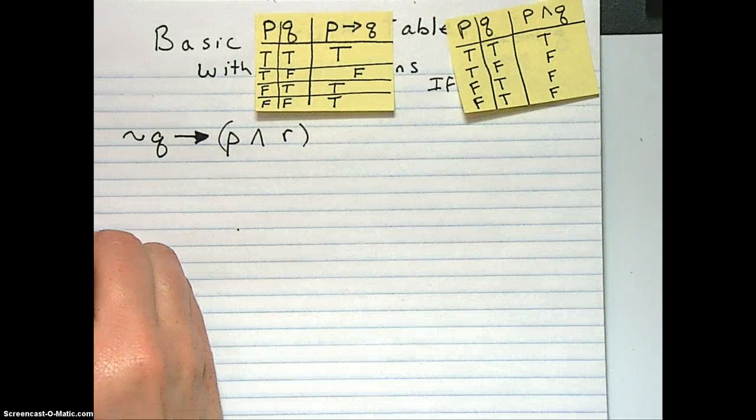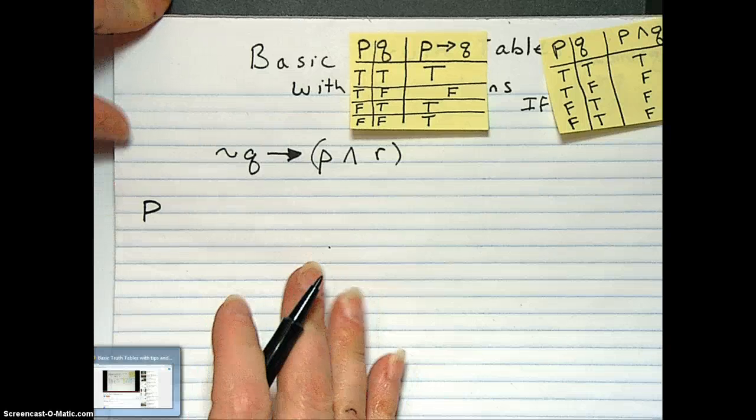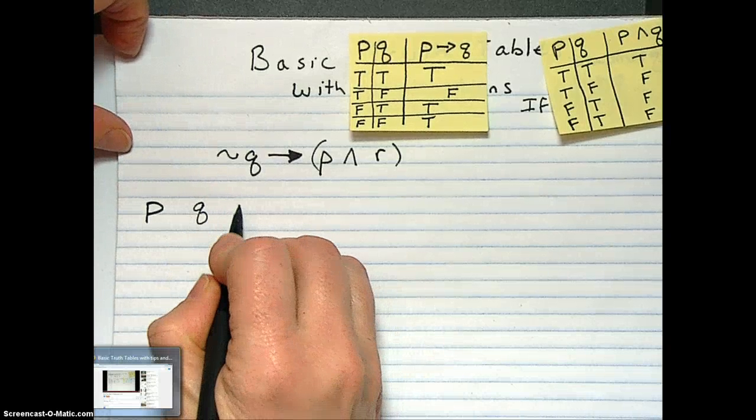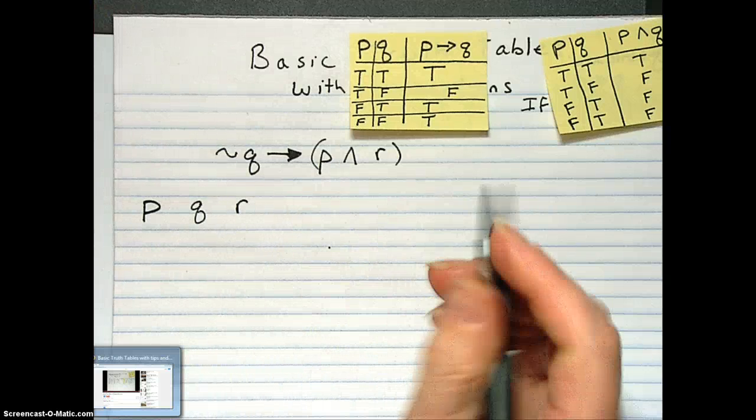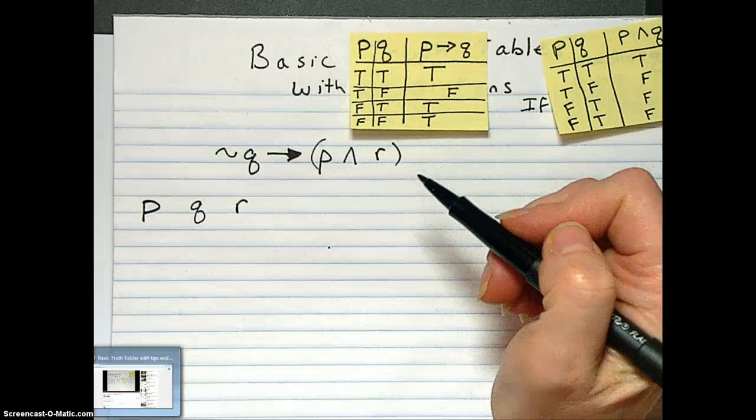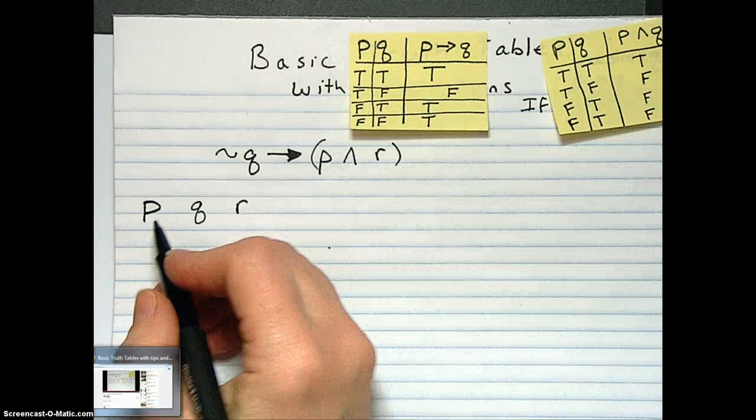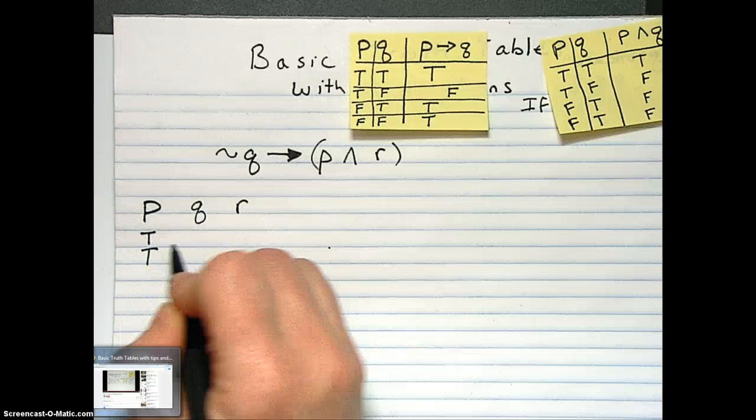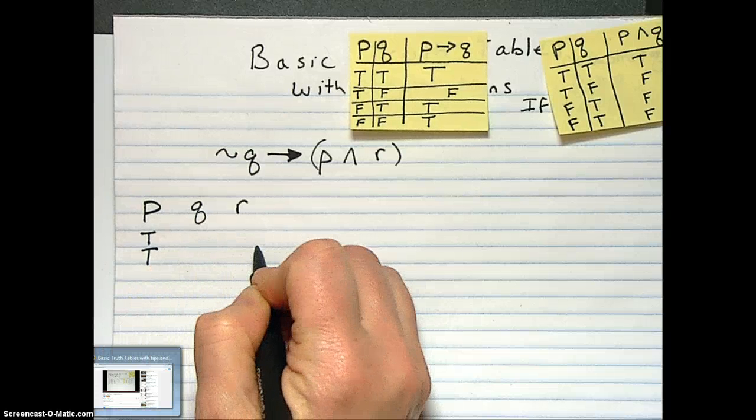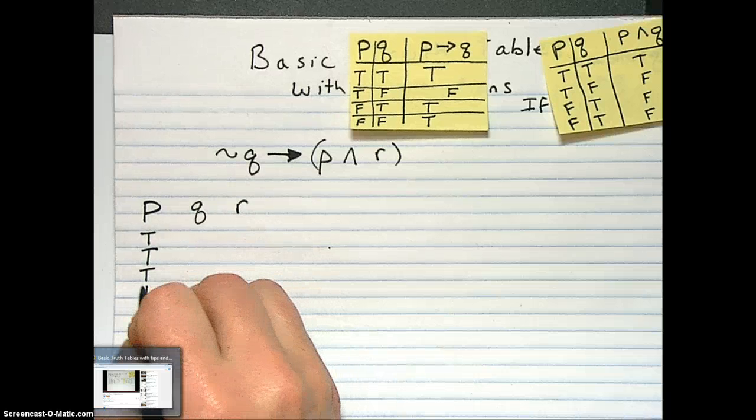So we've got a P, a Q, and an R. And before we would do true, true, true, false. But since we have three things, we actually have to go true four times to account for all the two different varieties of Q's and the two different varieties of R's. So we're going to do four trues.